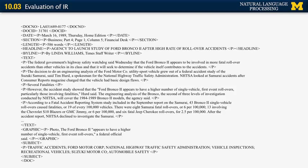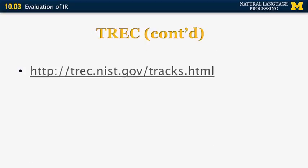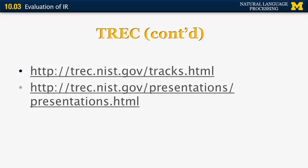A typical TREC document is marked up in SGML, or XML more recently, and contains markup for metadata such as headline, length, and date, with each paragraph marked appropriately. If you're interested in the TREC evaluation, you can go to the NIST website and find all the different tracks used in different years, along with presentations showing how different systems compare with one another.